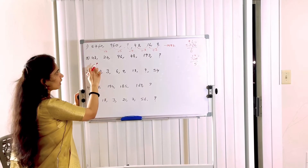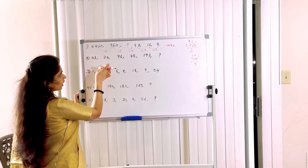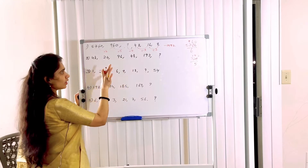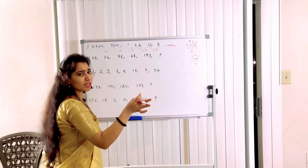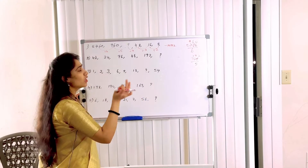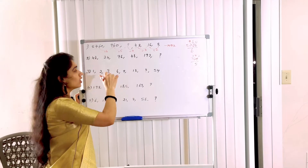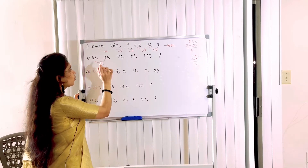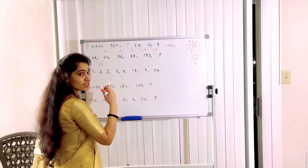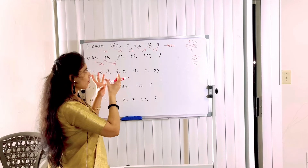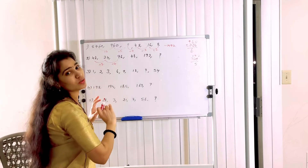Next problem: 48, 24, 96, 48, 192. The numbers decrease then increase, decrease then increase. So addition, subtraction, multiplication, or division — which one applies here? Looking at 48 and 24: 48 divided by 2 gives 24. Then 24 and 96: looking at the 24 table, 96 is in it — 24 into 4 gives 96. So the pattern is: divided by 2, into 4, divided by 2, into 4.